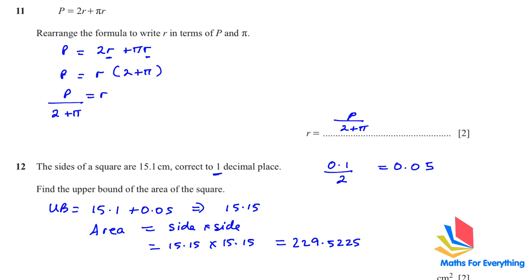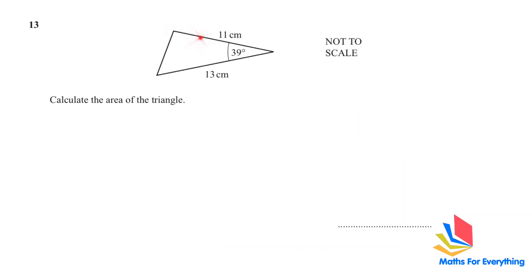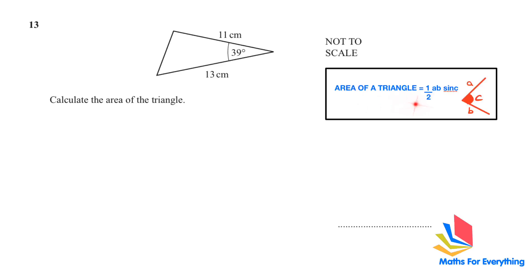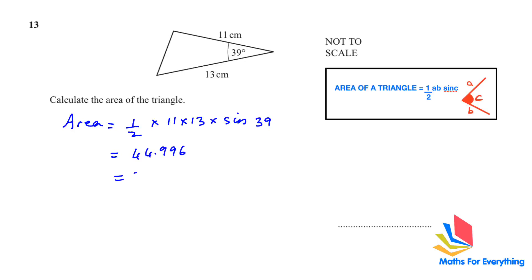Question 13: we have been given a triangle and need to find its area. This is not a right-angle triangle, so we use: area = ½ab sin C, where a and b are the sides and C is the included angle. With sides 11 and 13 and angle 39°, putting it in the calculator gives 44.996, which rounds to 45 square centimeters.